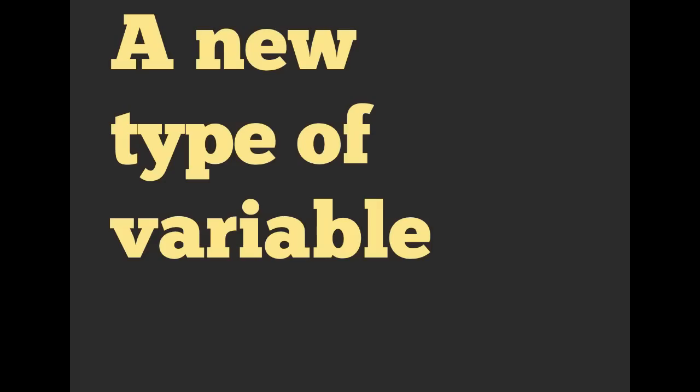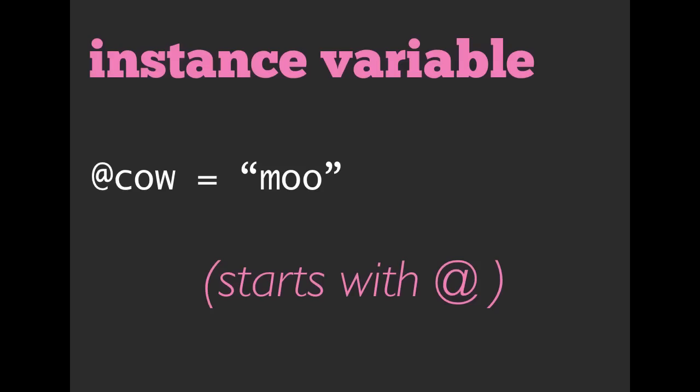There is a new type of variable we're going to be using today that we haven't really explored before. It is called an instance variable. So an instance variable starts with an at. So at cow equals a string of moo is an instance variable. And as I'm talking, you might hear me refer to it as the instance variable cow or at cow. Both of those things mean the same thing. So if I'm introducing this now, it probably means we're getting ready to go ahead and use it.